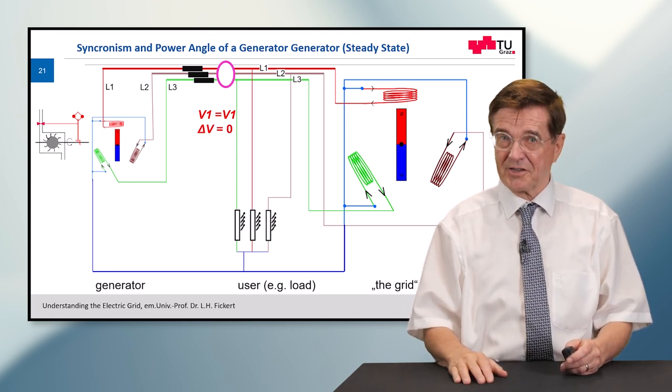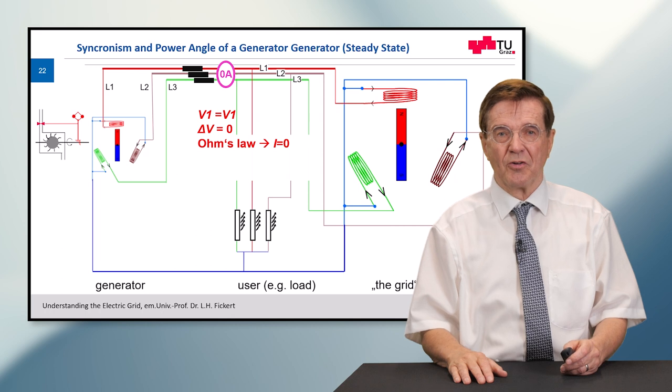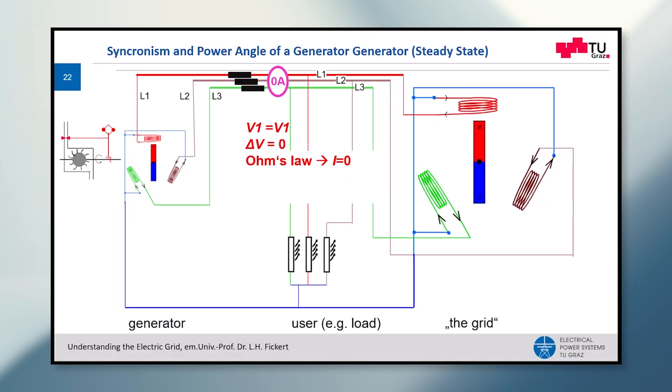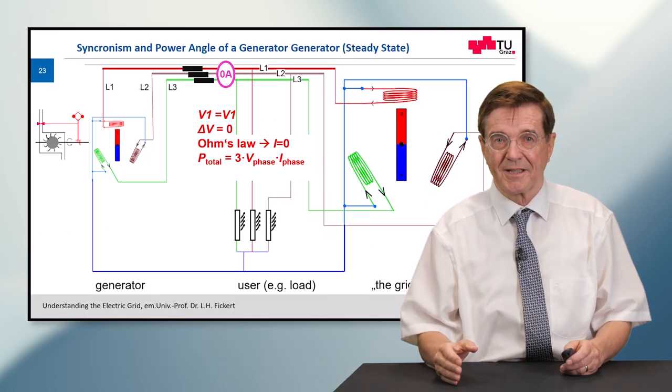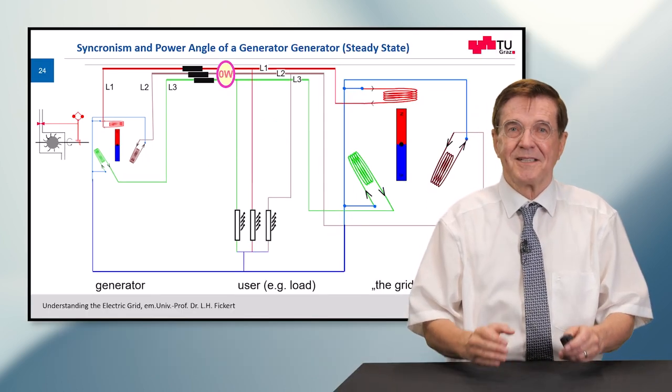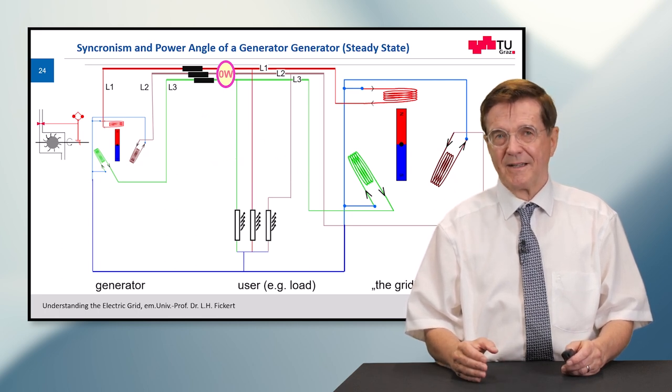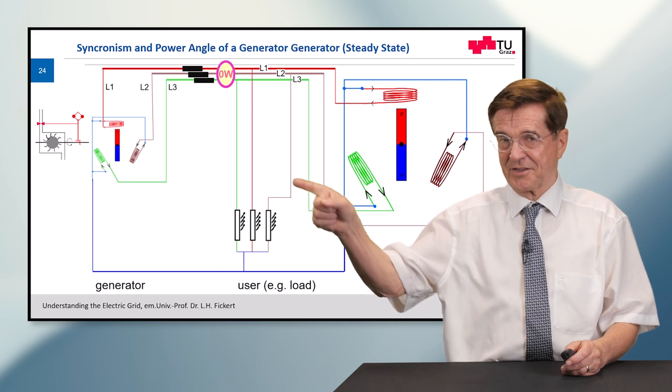Now if the voltage difference is zero, according to Ohm's law there is no current flowing. If there is no current, the power exchange, which is three times due to the three phase system the phase voltage times the current, is zero. So there is no power exchange. But now why is the turbine so essential?